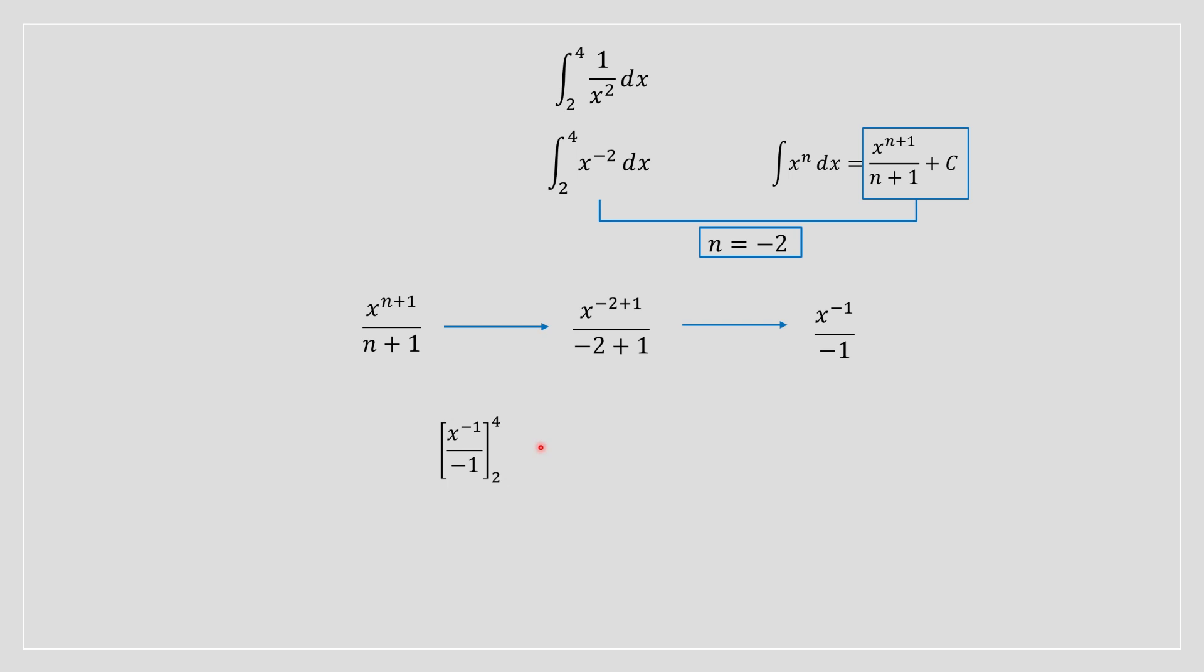Once you do that, you're going to then subtract the lower bounds when it's applied to the polynomial, when it's replaced on the x.